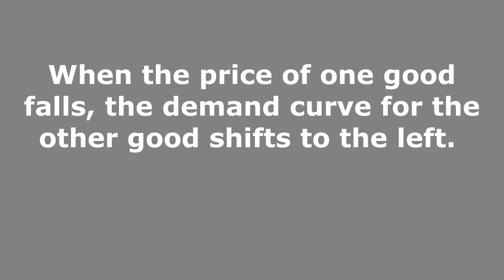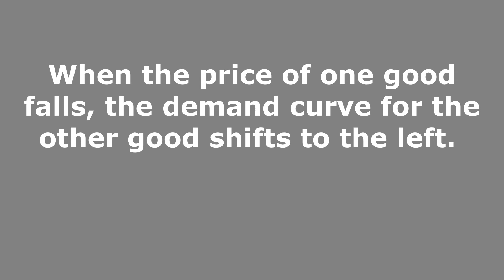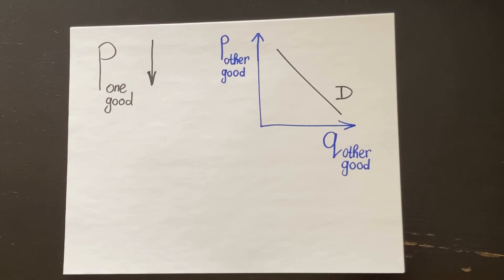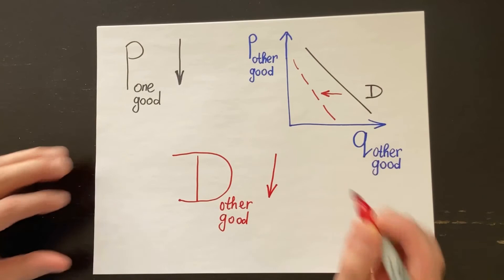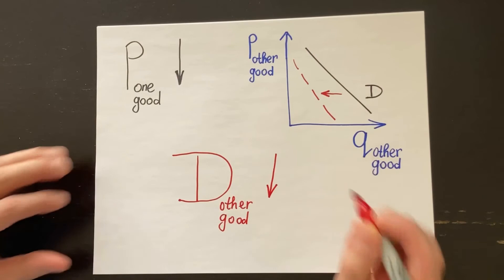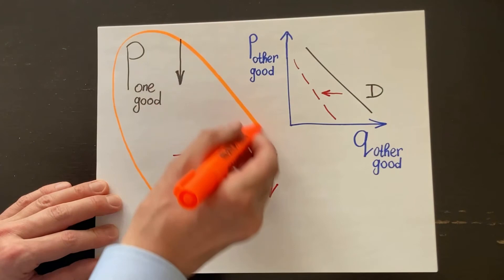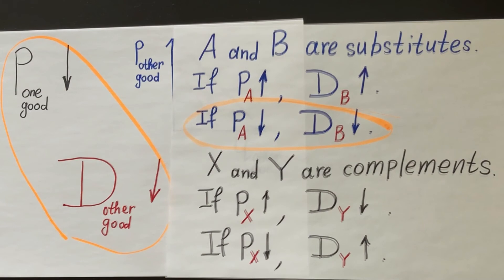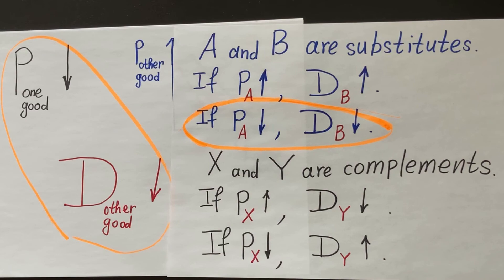Let's solve one more problem. When the price of one good falls, the demand for the other good shifts to the left. Are these two goods substitutes or complements? We know that when the price of one good falls, the demand curve for the other good shifts to the left, which means the demand for the other good falls as well. Looking at the definitions of substitutes and complements, you can see this matches the definition of substitutes. Therefore, our two goods are substitutes.